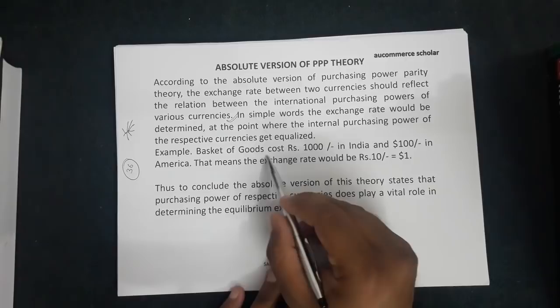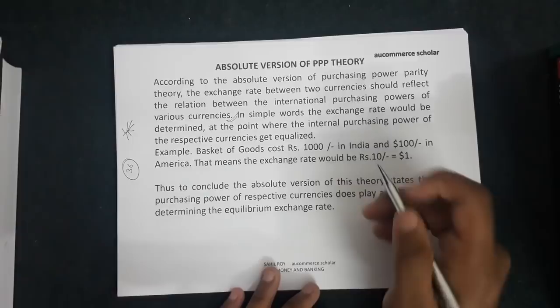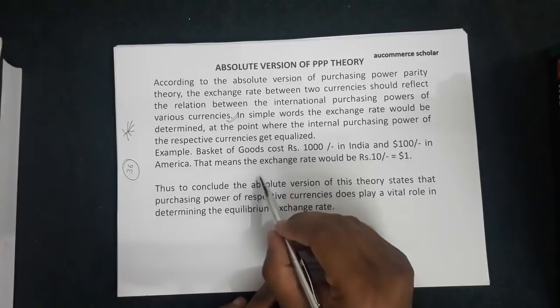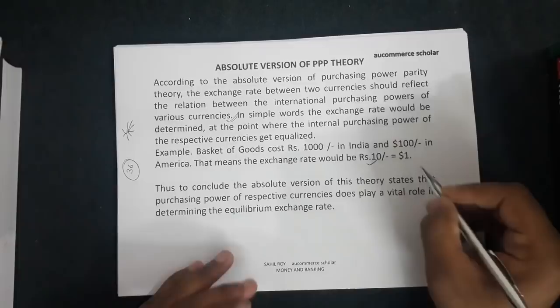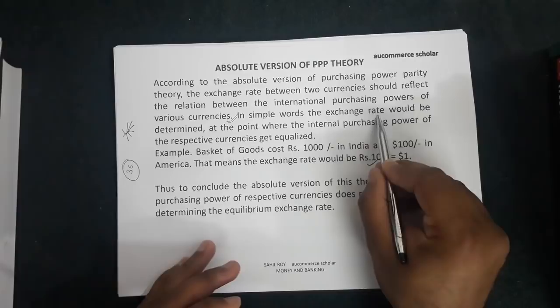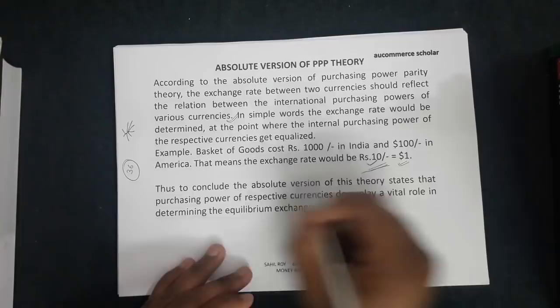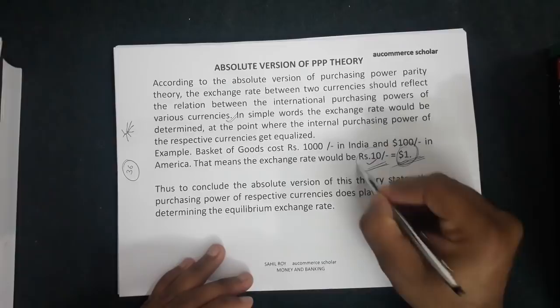For example, if a basket of goods costs 1000 rupees in Indian currency inside India, and you buy the same basket in America for 100 dollars, that means the exchange rate would be 10 rupees equal to 1 dollar. The exchange rate is determined at the point where the internal purchasing power of the respective currencies gets equalized — this is the absolute version of PPP theory.